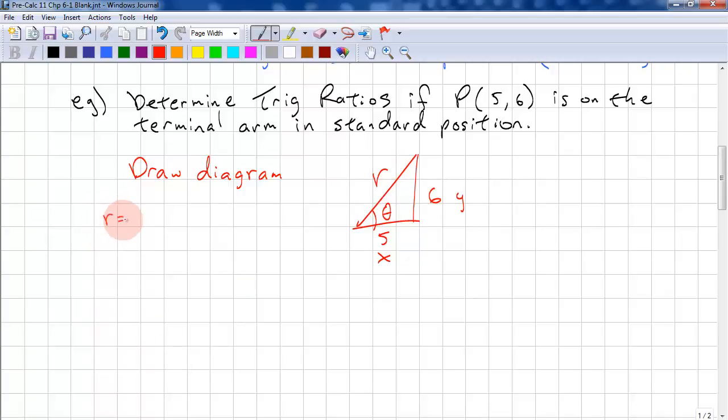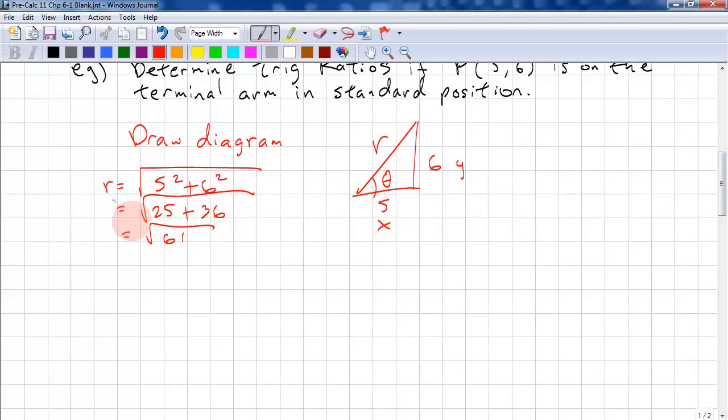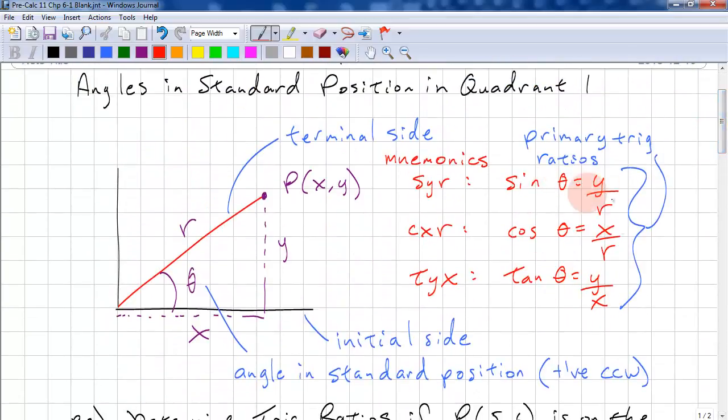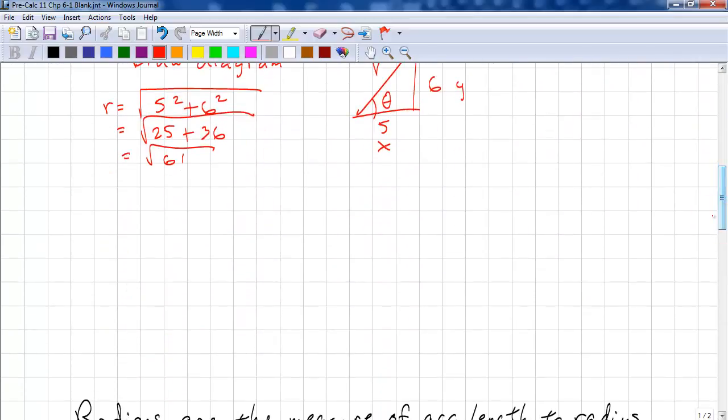So r equals, we just use Pythagorean here. This is square root of 5 squared plus 6 squared, so we have square root of 25 plus 36, which is square root of 61. Now that we have r, x, and y, we can go back and use our primary trig ratios to figure out the answers.